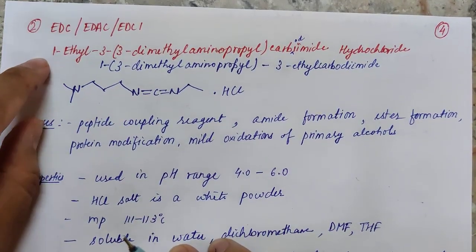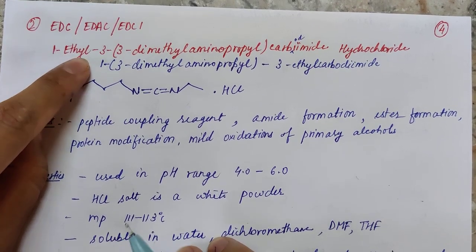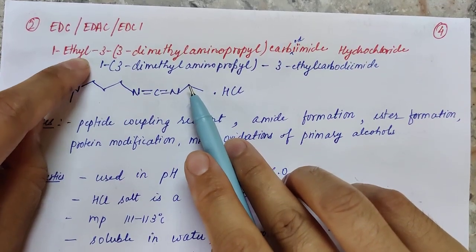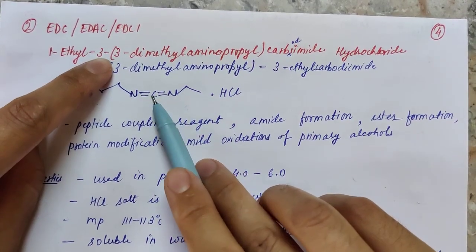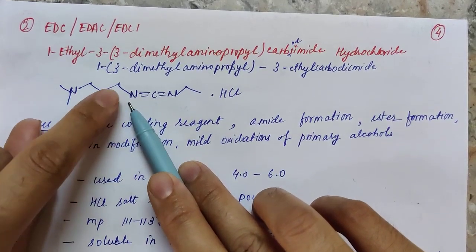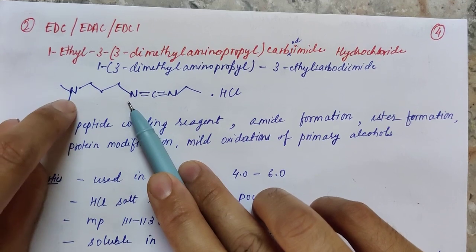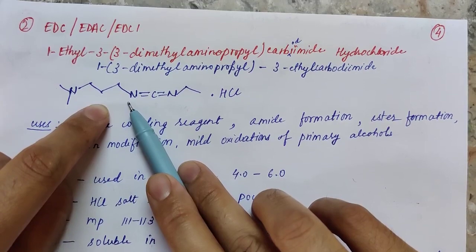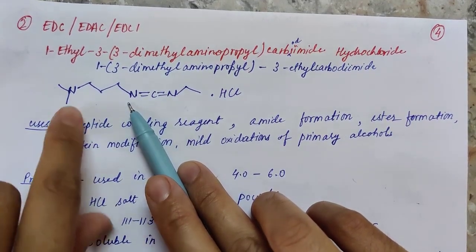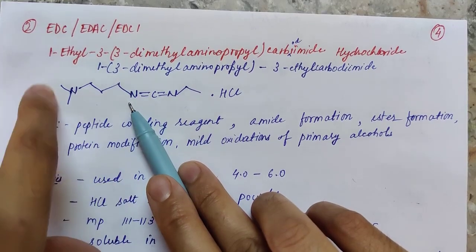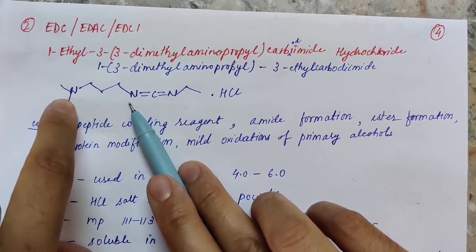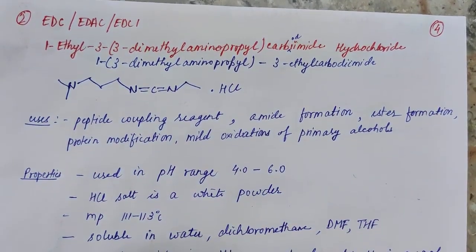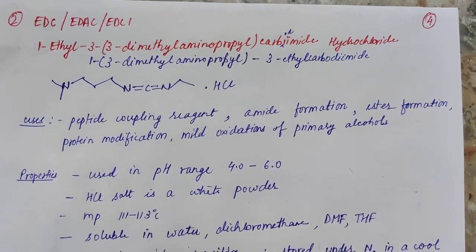This reagent is generally used in the form of its hydrochloride salt. Its IUPAC name is 1-ethyl-3-(3-dimethylaminopropyl)carbodiimide. To understand this: on the first position is an ethyl group, and on the third position is the 3-dimethylaminopropyl substituent.